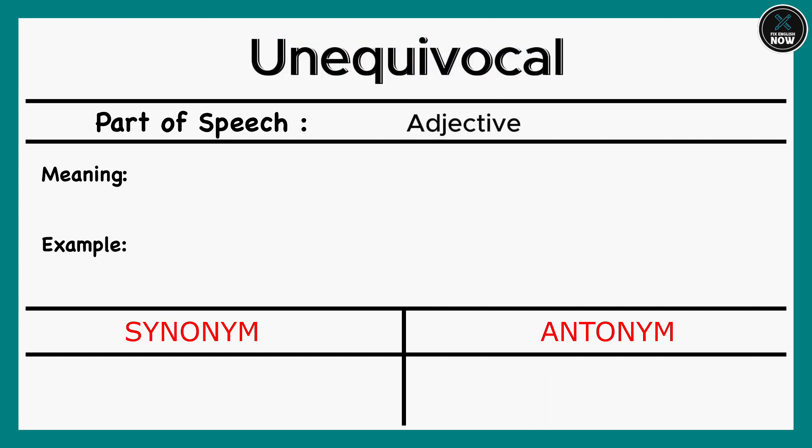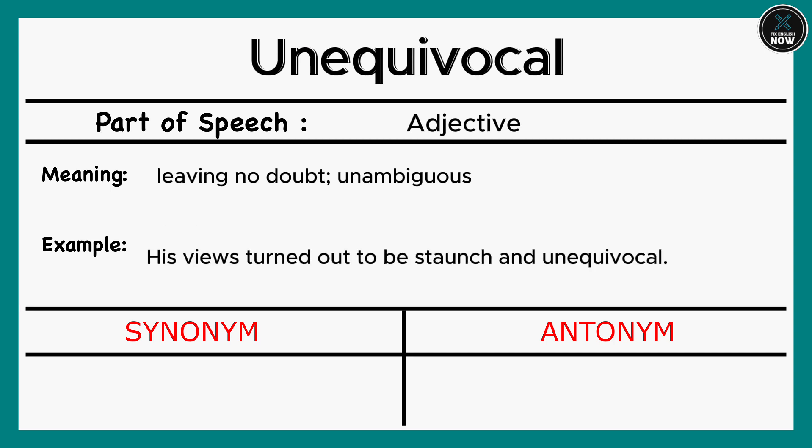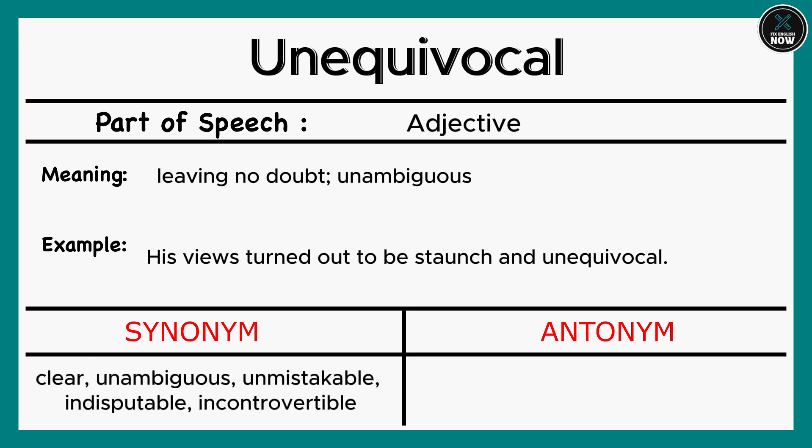Unequivocal: Leaving no doubt; unambiguous. Example: His views turned out to be staunch and unequivocal. Synonyms: Clear, Unambiguous, Unmistakable, Indisputable, Incontrovertible. Antonyms: Equivocal, Ambiguous, Vague.